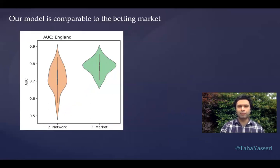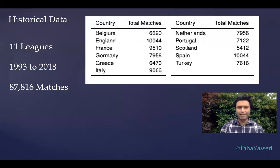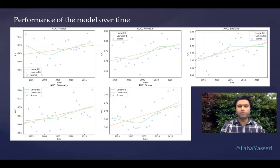You can compare it with the best predictions from betting markets, which use state-of-the-art technologies and data, and our model is comparable. It's not exactly as good as the state-of-the-art, but it's comparable and very simple to apply to historical data. We applied it to 11 major leagues in Europe over many years, and we find that predictability has increased over time in at least the major leagues — the bigger ones all show an upgoing trend in predictability.